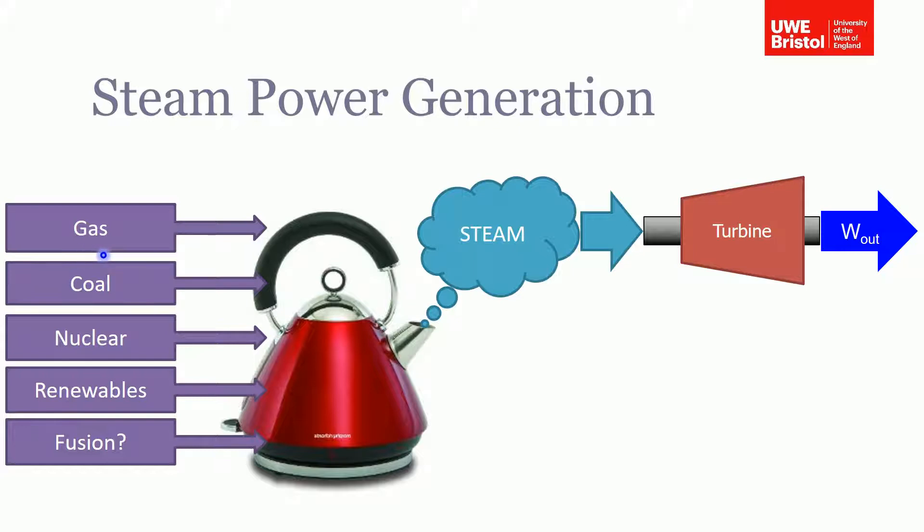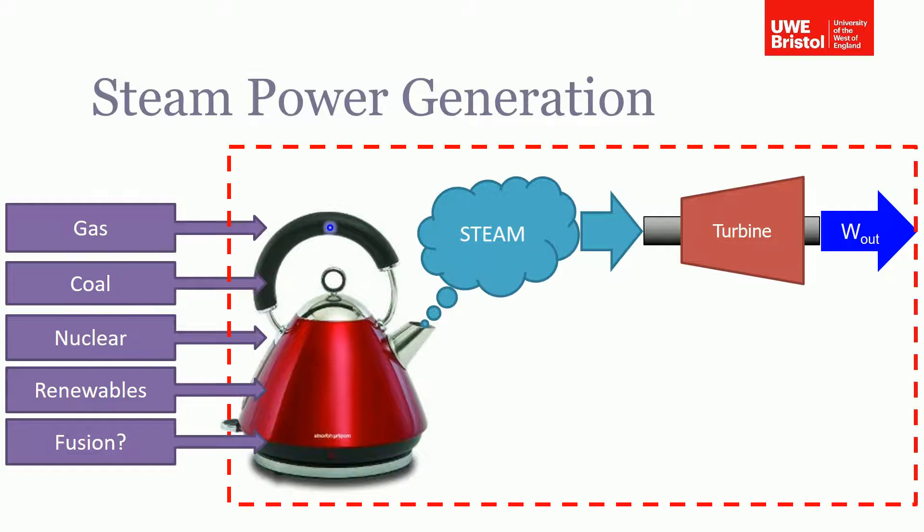Whether you're powering that with gas, coal, nuclear, renewables, fusion in the future, whatever - the idea is you're generating steam which you then pass through a steam turbine to generate work which you then use to generate electricity. So what I'm going to be talking about in this section is basically what's bounded by this red box here.